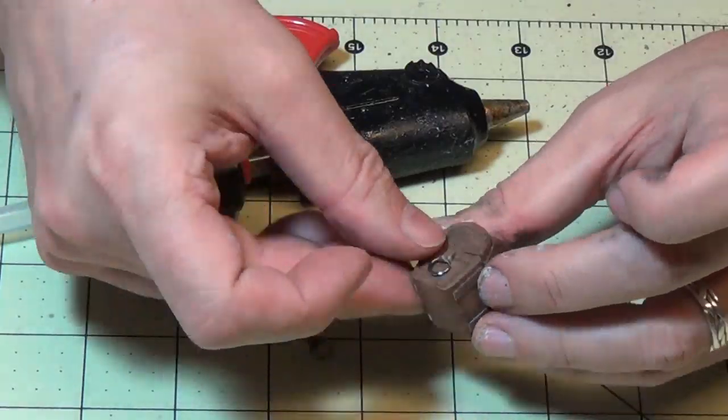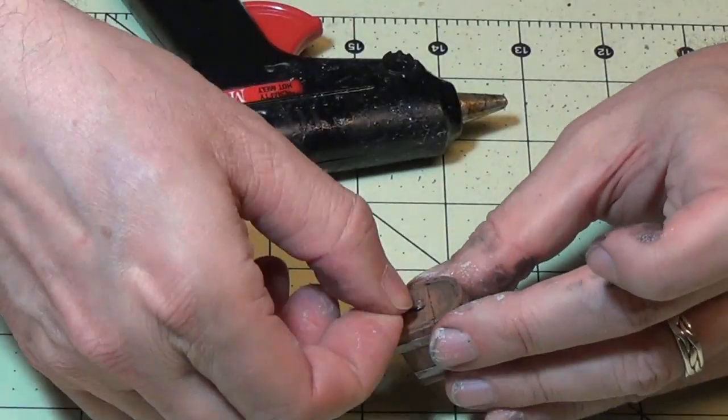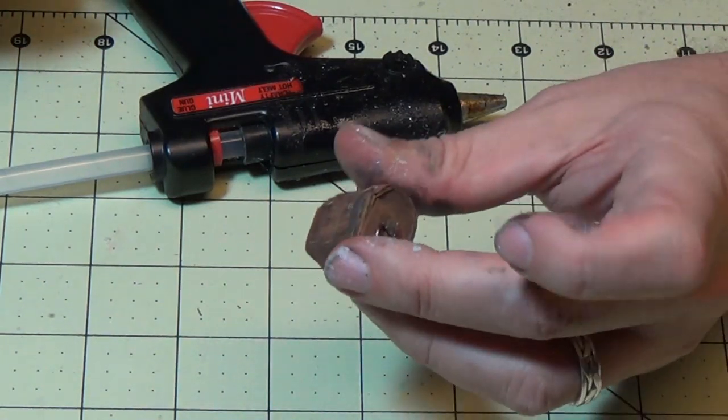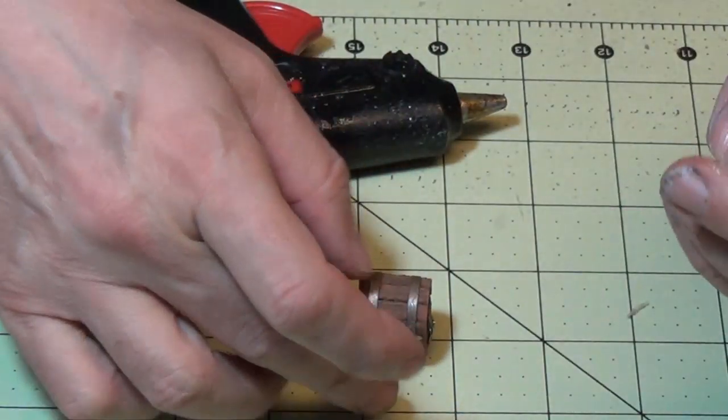So I'm going to use hot glue and just glue that on the side, right on the side of the chest there. Have a really nice effect. Look at that. Don't look good? Yeah. Just that little thing makes a really big deal.